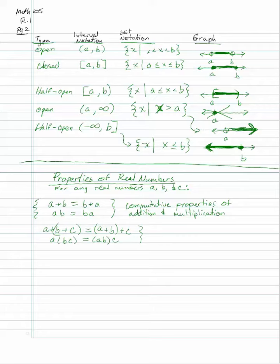Next are the associative properties, which are about grouping. Since you can only add two numbers at a time, the associative property says it doesn't matter how you group them. You can do A plus B first, then add C — or do B plus C first, then add A — and you'll get the same answer. Same applies to multiplication.